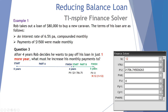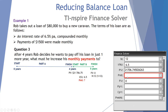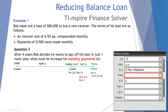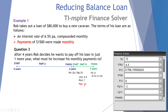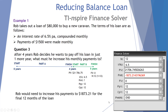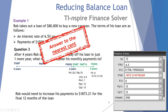This final period is one year, measured in months, so N goes in as 12. The interest rate remains 6.5% per annum. The monthly payment is our unknown, so that's left blank. Payments per year is 12, compounding periods per year is 12, and payments are made at end. The monthly payment Rob would need to make to finish the loan in one more year is $1,873.21, rounded to the nearest cent.